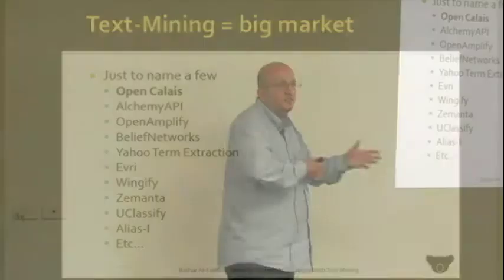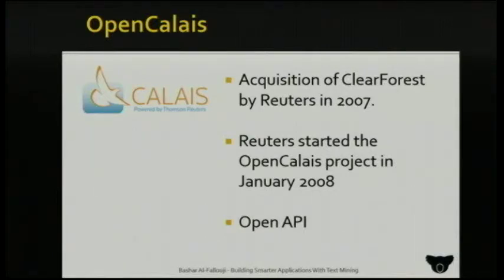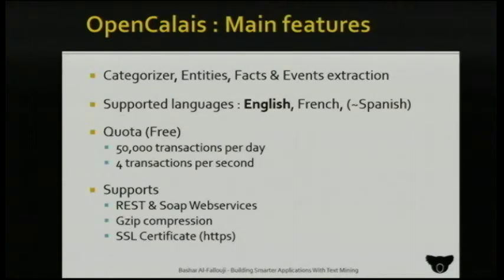Open Calais was bought by Reuters, the big news agency, in 2007. They put money back into the project and reanimated it. It's supposed to be an open API. It offers categorizers — they have their own taxonomy and classification. When you submit a text, you can ask them to return what categories match. It also offers entity extraction, which is very interesting with Open Calais — they have a lot of specialized subsets.